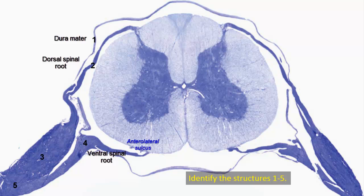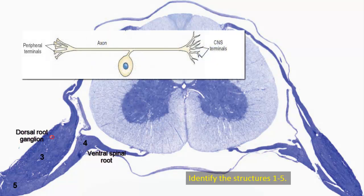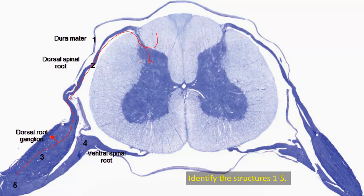Note the dorsal root ganglion, labeled 3. The dorsal root ganglion contains sensory nerve cell bodies that are described as pseudo-unipolar. The cell body has a single process — hence unipolar — but it is pseudo-unipolar because that process divides into a peripheral process and a central process. The peripheral process reaches through the spinal nerve, and the central process enters the cord through the posterior root of the spinal nerve.